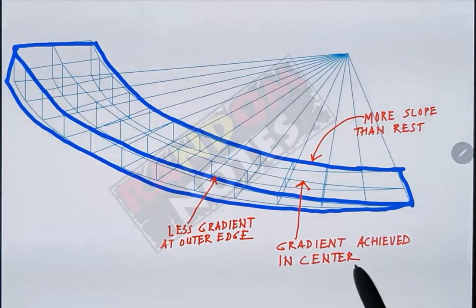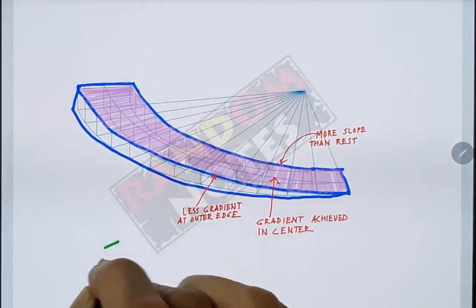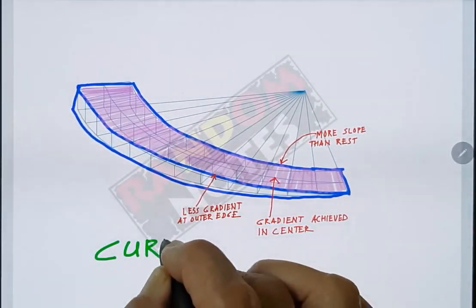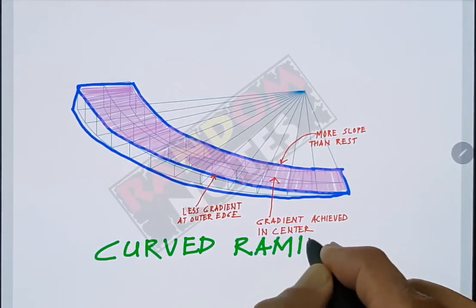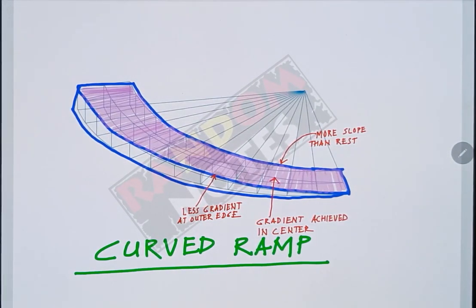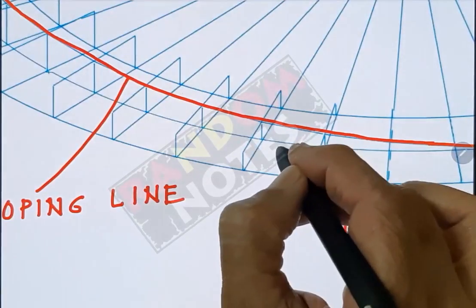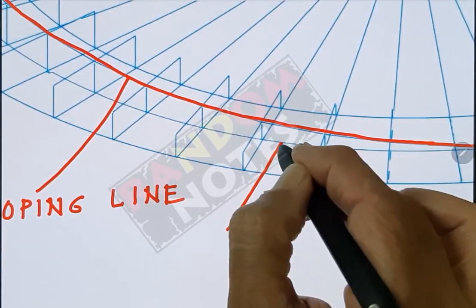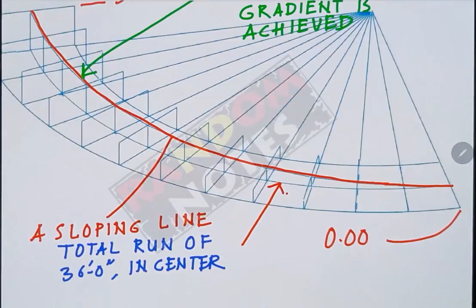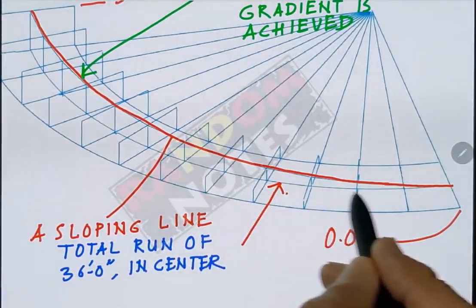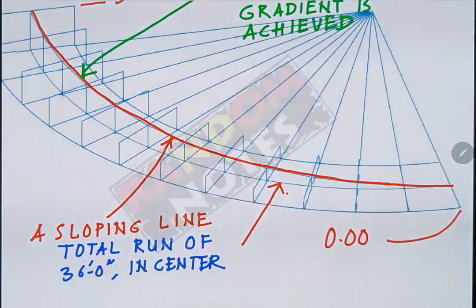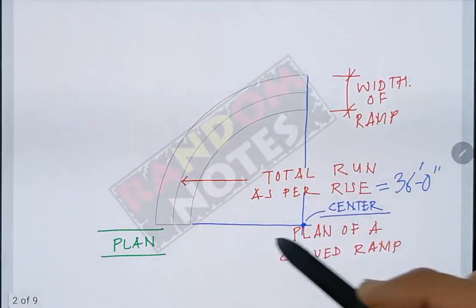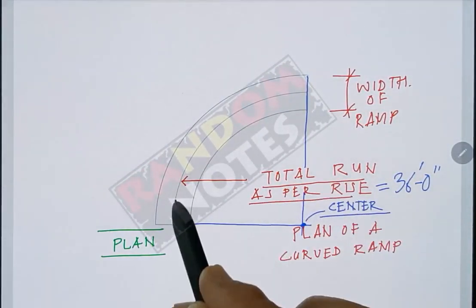The pink part is the plane of the curved ramp as desired. Let us take a quick recap. Make the curved ramp in plan. The curve may be a segment of a circle and as per the design intent. In this case, it's a quarter of a circle.